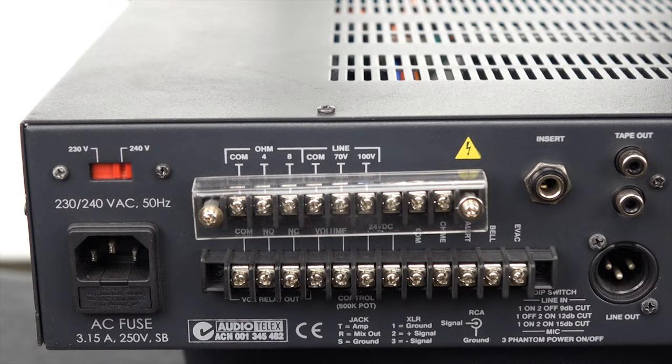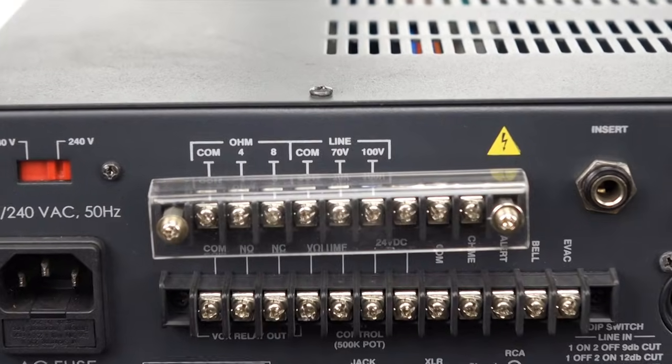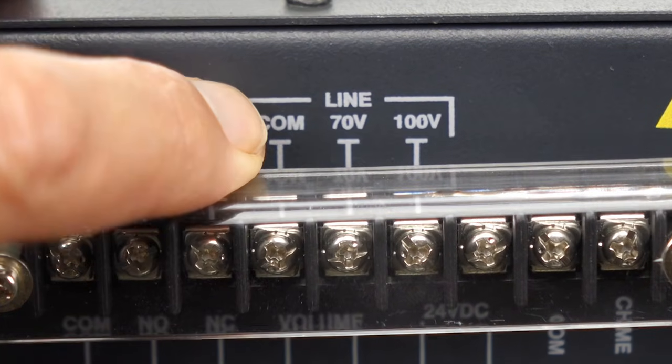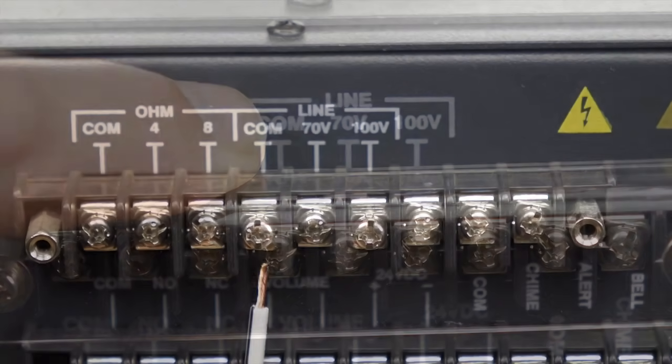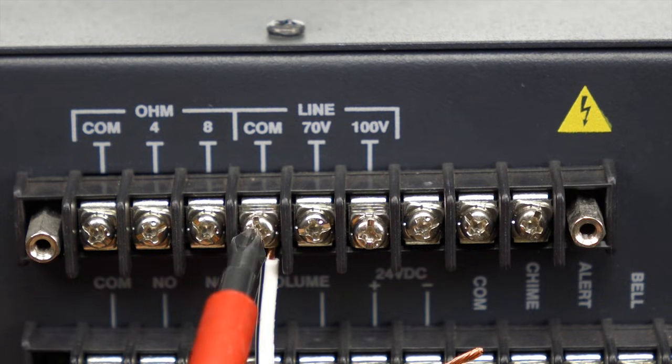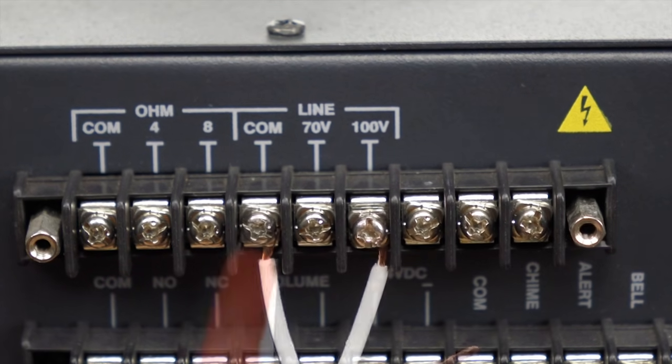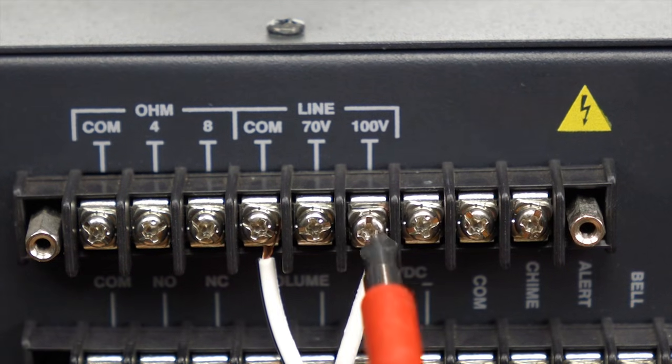Now look on the back of the amplifier for the speaker connections and identify which one is the common terminal for high voltage or constant voltage speakers. Then connect the wire with the trace to this common terminal. The other speaker wire will connect to the 100 volt terminal.